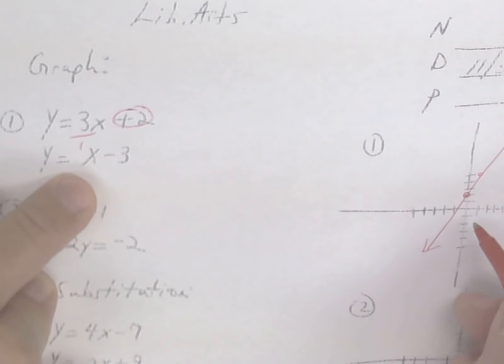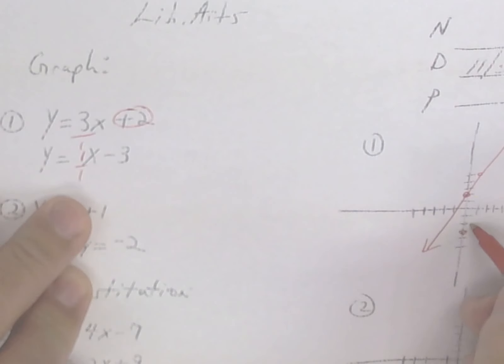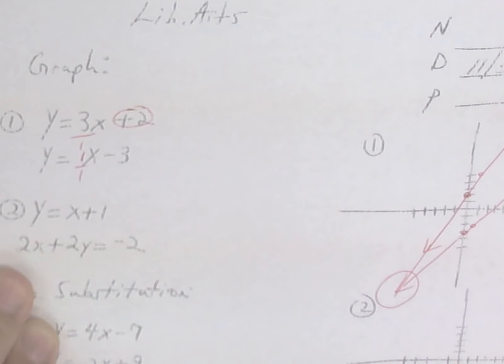Second one, you're going to go down 3. The slope is 1 over 1, so you're going to go up 1 over 1. And where they cross is the solution. They're not going to cross until somewhere down here. But again, I'm just checking your graphs.